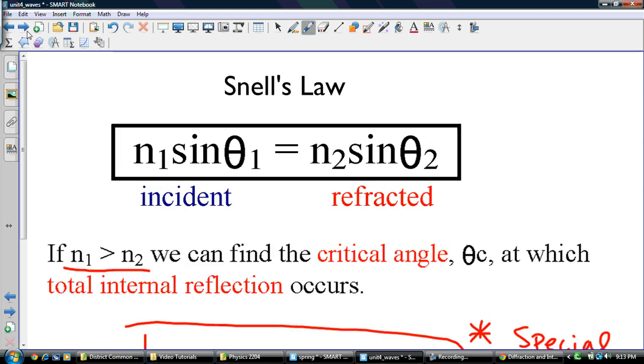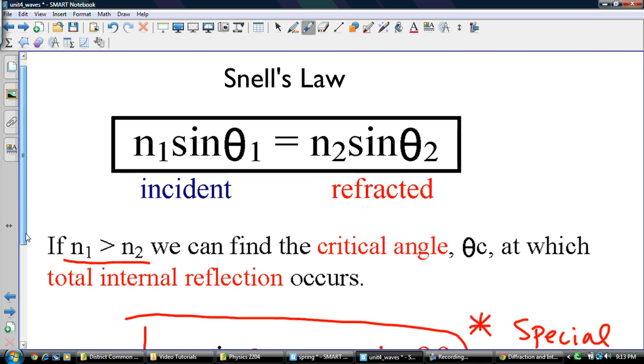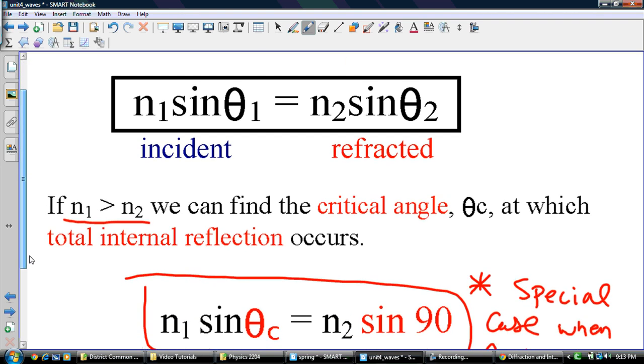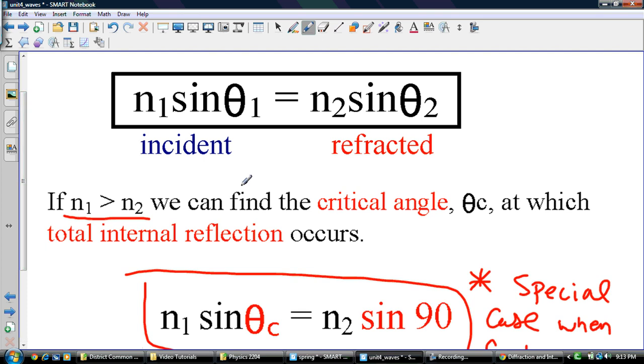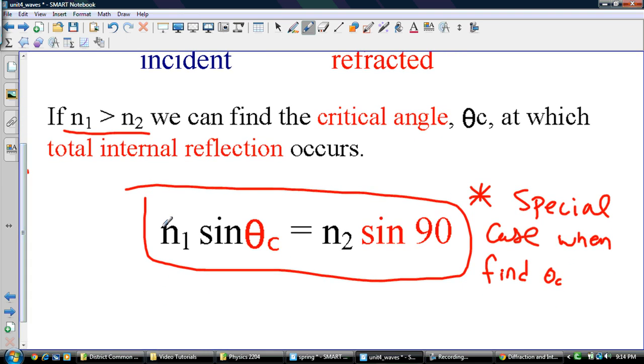Here's an example. You guys got that in your notes. Here's another thing we talked about. Snell's law, N1 sine theta 1 is equal to N2 sine theta 2. So that's the incident. This is the refracted. And if N1 is greater than N2, we can find the critical angle. And that's theta C at which total internal reflection occurs.